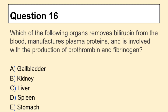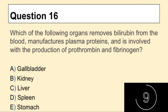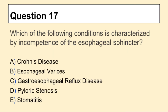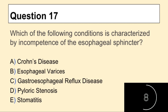Question 16: Which of the following organs removes bilirubin from the blood, manufactures plasma proteins, and is involved with the production of prothrombin and fibrinogen? Question 17: Which of the following conditions is characterized by incompetence of the esophageal sphincter?